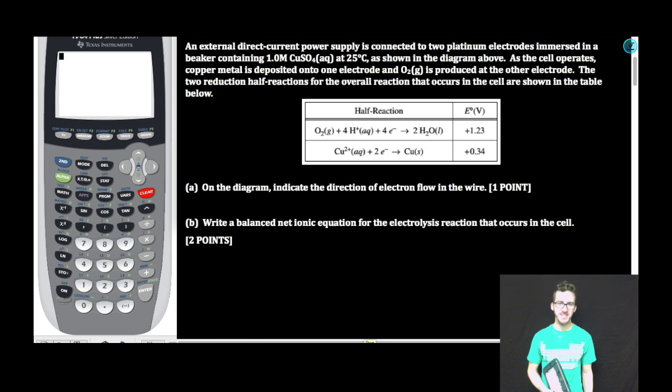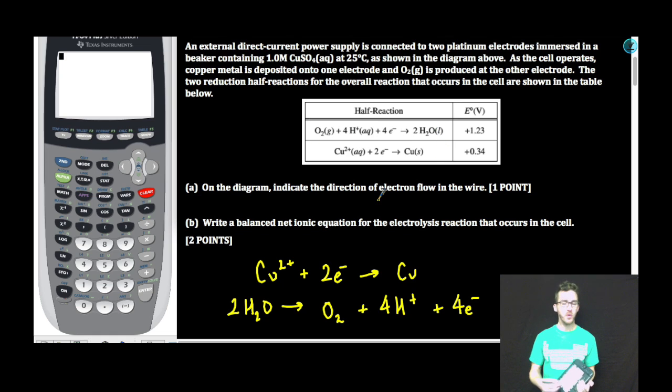Part B. Write a balanced net ionic equation for the electrolysis reaction that occurs in the cell. All right, there are a couple of ways that you can determine this. One, we've already decided that the copper is being reduced. So I'm going to leave that half reaction as is, which means that if we already have something gaining electrons, then something else must be losing electrons, and therefore I need to reverse this other half reaction. Another way you can understand which one you need to flip is recognizing that we're producing oxygen gas. And so we would need to reverse this half reaction to have oxygen gas as a product.